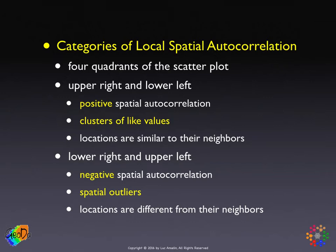In the lower right and upper left — the off-diagonal quadrants — we have evidence of negative spatial autocorrelation. These are values above the mean surrounded by neighbors below the mean, or values below the mean surrounded by neighbors above the mean. We call these spatial outliers: locations that are very different from their neighbors.